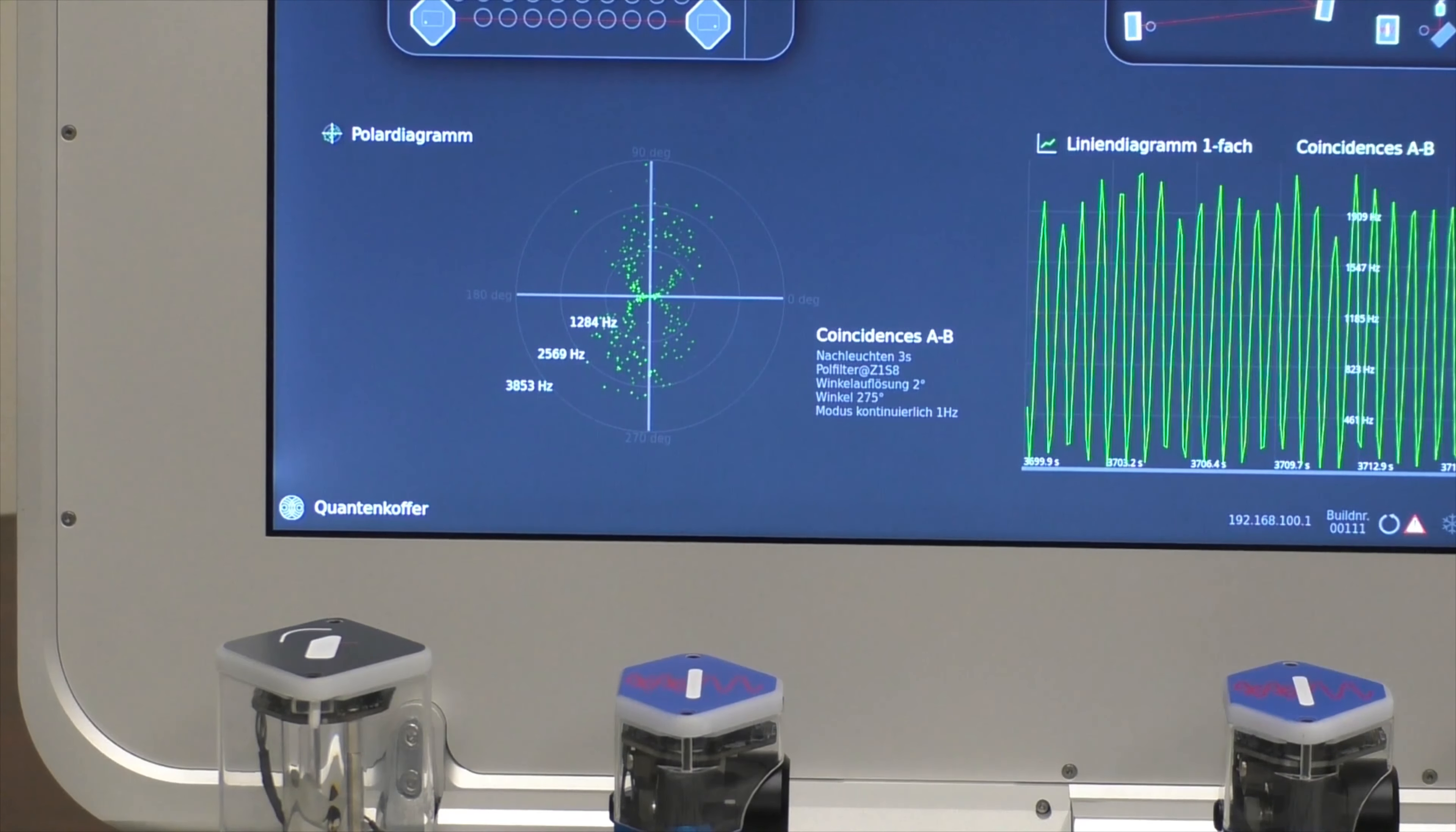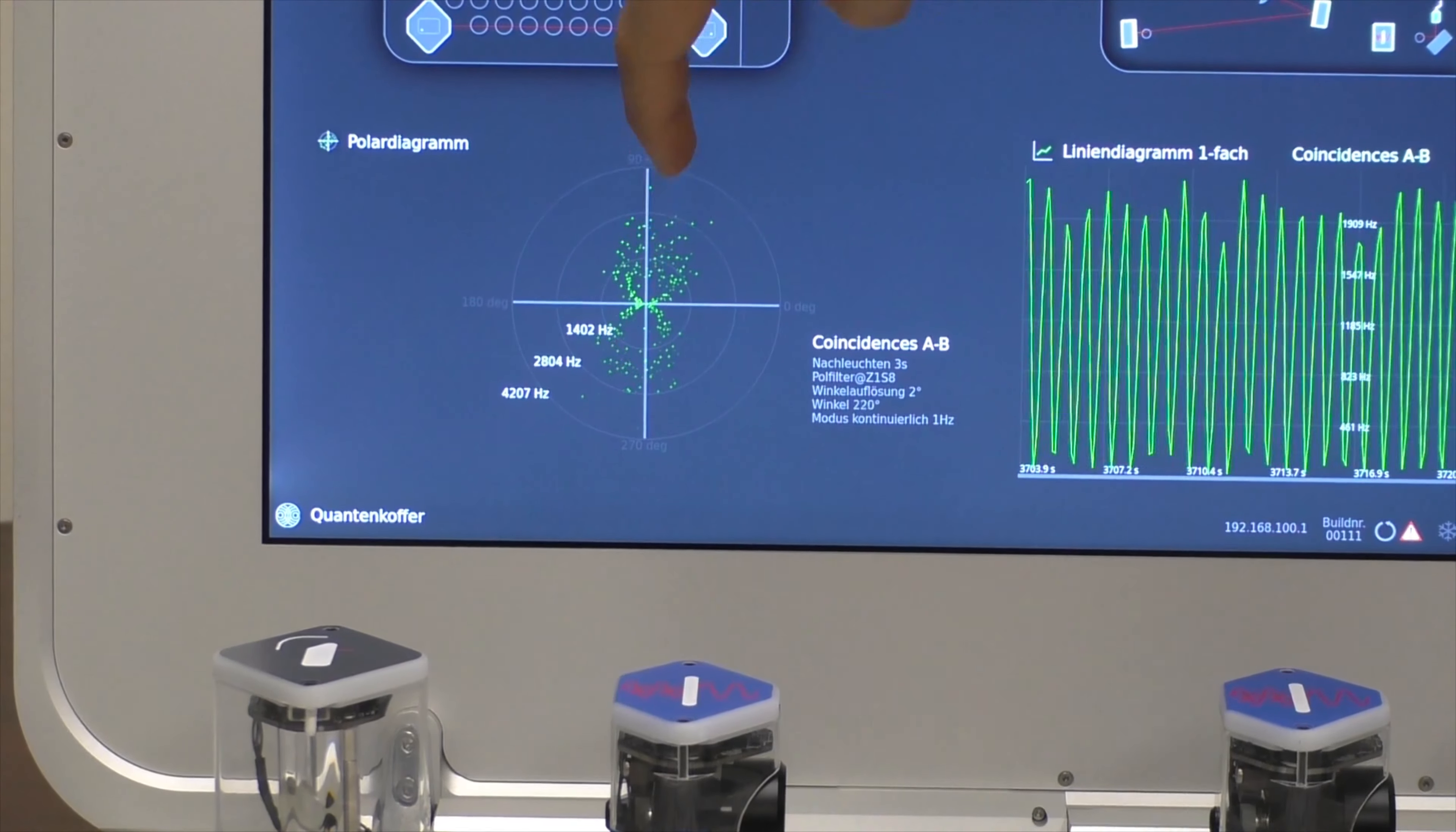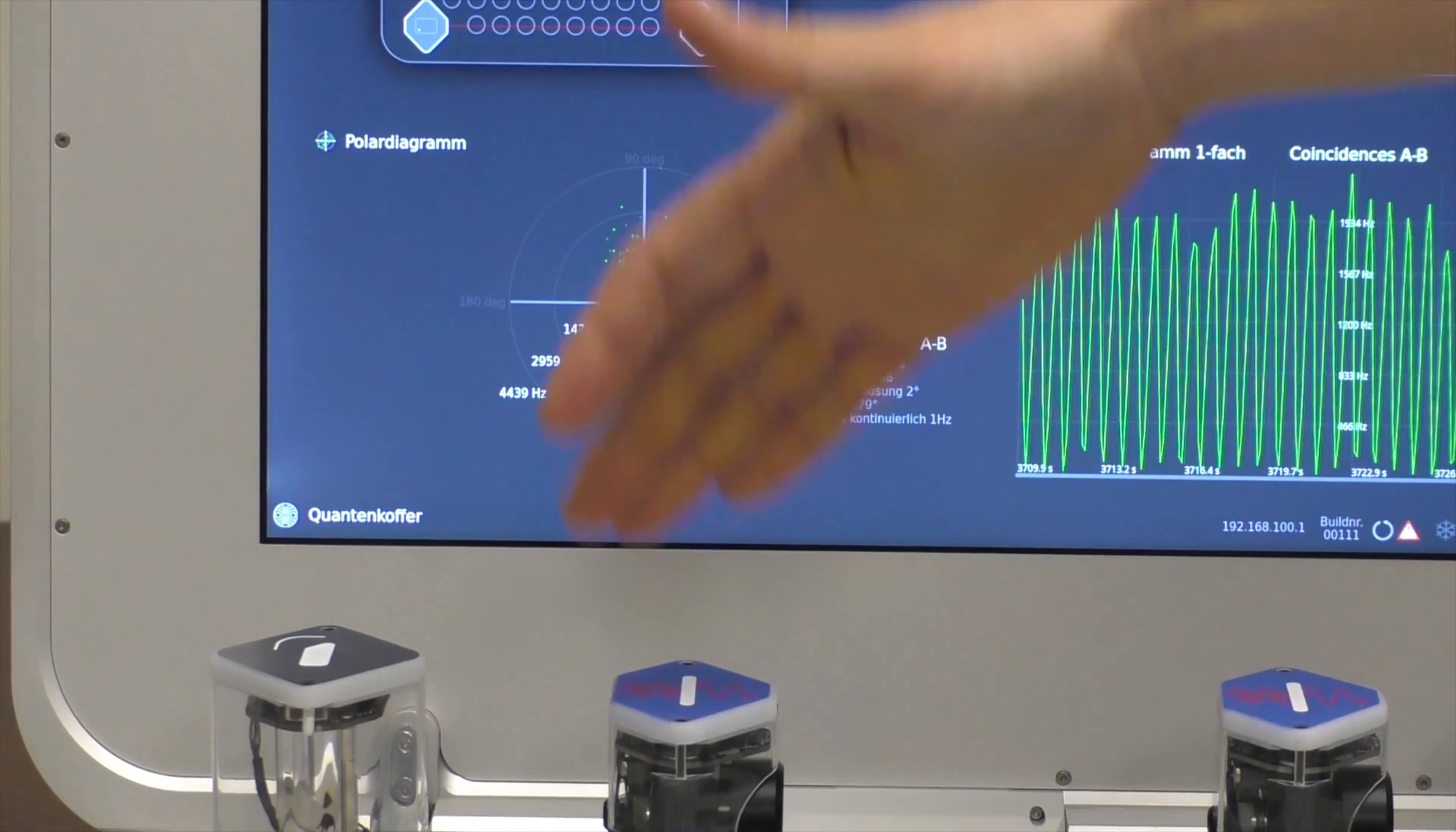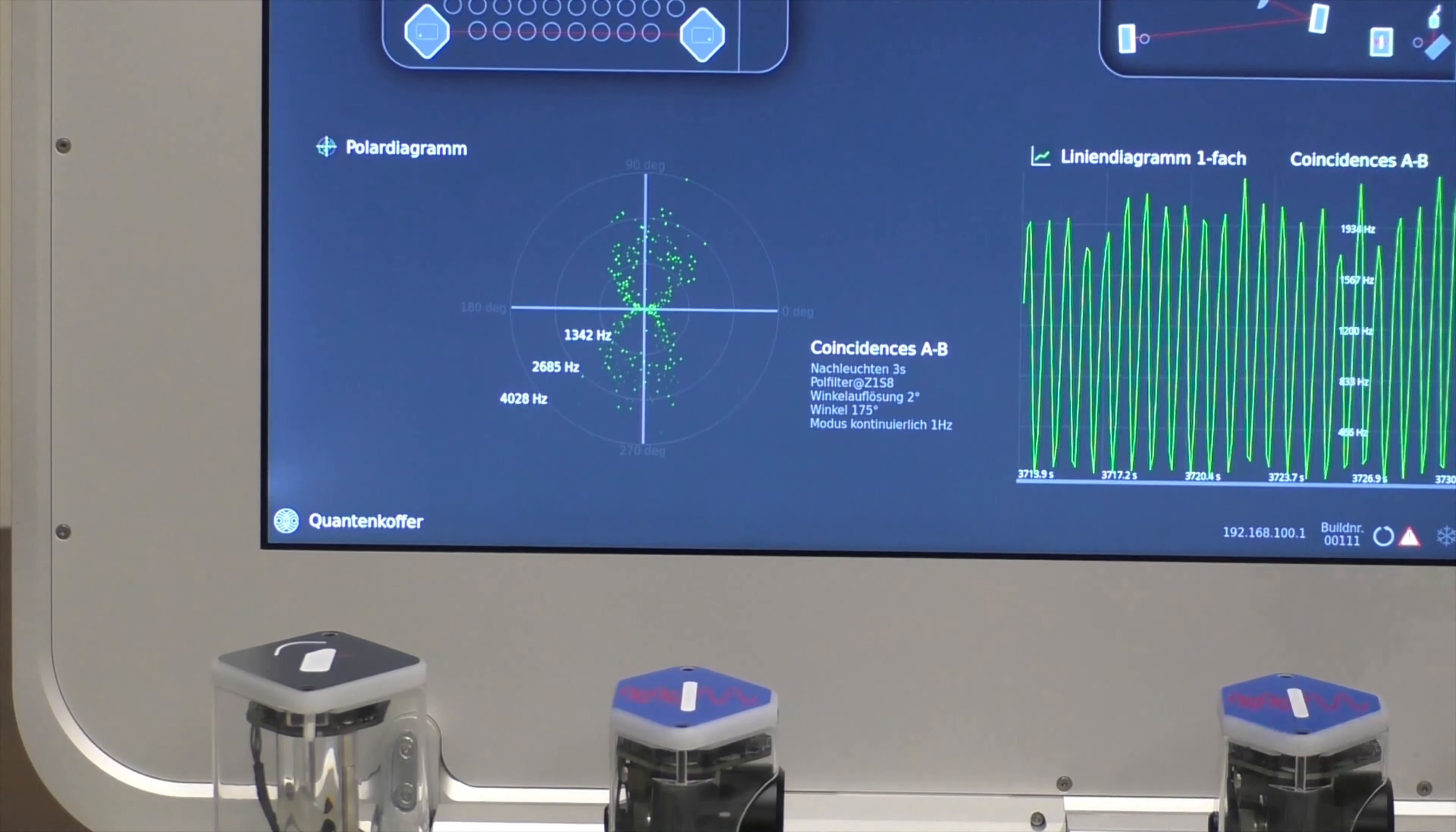So in this case, with one brief view of this display, you can see that there are a lot of counts in this direction but almost no counts in this direction, which means that of course this polarizer is set to this direction over there.